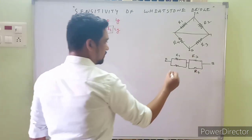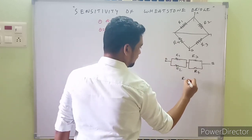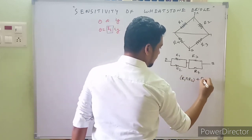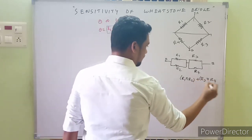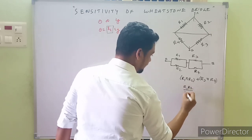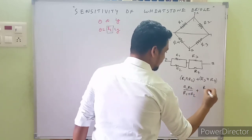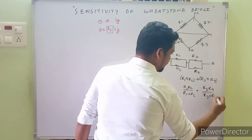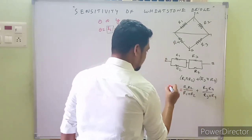The equivalent resistance R_eq is obtained by combining the two parallel pairs in series: R_eq equals (R1·R2)/(R1+R2) plus (R3·R4)/(R3+R4).